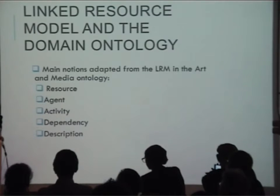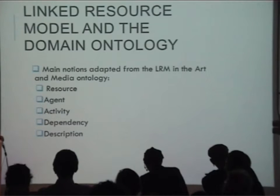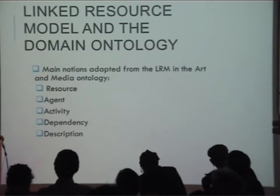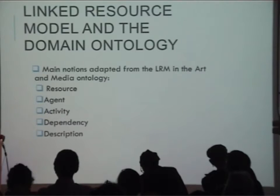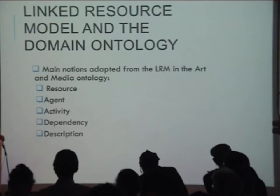Dependencies are another core part of the model, including not only obvious technical dependencies such as software or hardware, but also dependencies on other entities such as organisations, roles, policies, and other elements. Once dependencies are modelled, the model can be used in a variety of ways, such as risk analysis, assessing the impact of various types of change, or implementing various policies such as migration. The LRM model features individual components including resource, agent, activity, dependency, and description. These components are then extended by the domain ontologies to better reflect the specific nature of the individual domains.